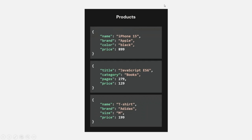For example, in a products collection with three product documents, all three documents have different fields. The first document has name, brand, color, and price. The second document has title, category, pages, and price. Both documents are completely different in structure, yet both describe a product. MongoDB will not complain about it and will allow us to store documents with different structures — different fields and different numbers and types of fields in the same collection.